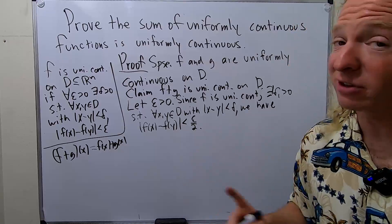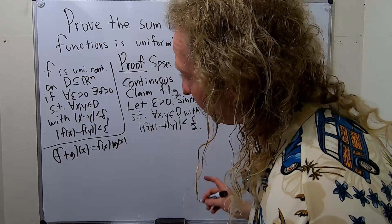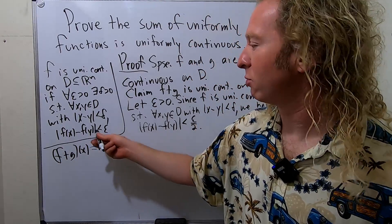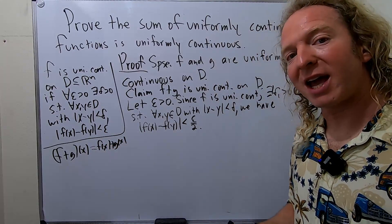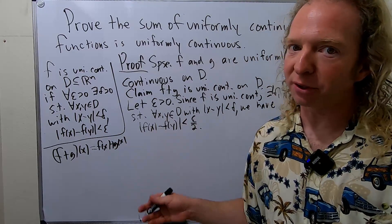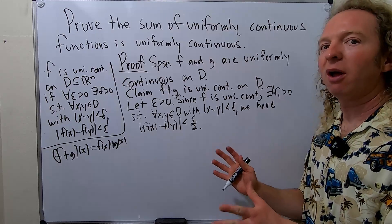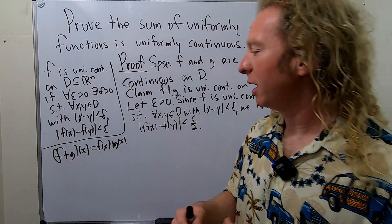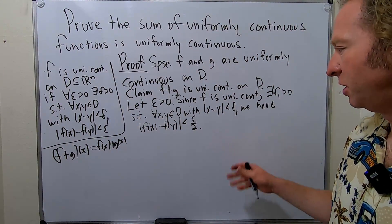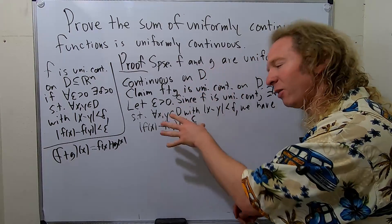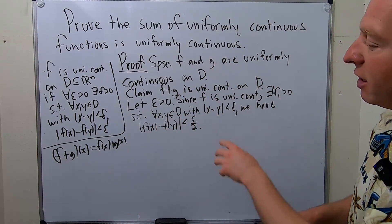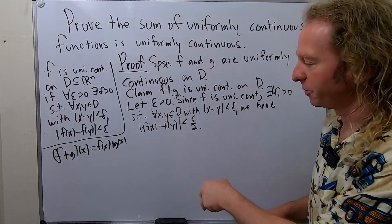I have a feeling that because we have F plus G, when we get to this step we're going to have to break it up and probably use the triangle inequality. I just grabbed this problem from a book and I thought let me just try to do it and record it. So I'm choosing epsilon over 2 because I think we'll be able to use the triangle inequality.